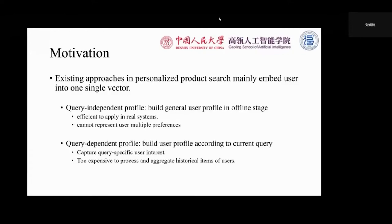The first kind of approaches build a general query-independent user profile in the offline training stage. They construct static embeddings for users and products, which are efficient to apply in real systems. However, they cannot represent user multiple preferences. For example, a user may prefer Surface on computers and prefer iPhones on cell phones. If we embed this user into one vector, the preferences of different categories will be mixed up together, thus making the profile inaccurate.